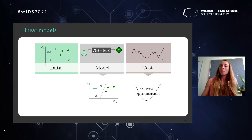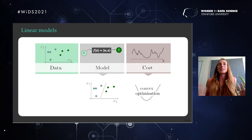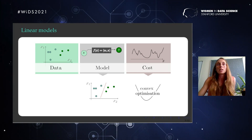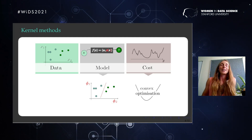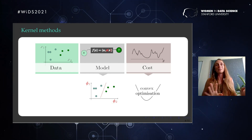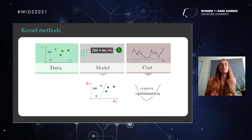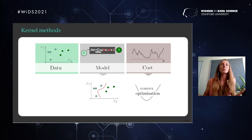Kernel methods: to understand what they do, you start with linear models, which just take an inner product between a vector representing your data and some trainable parameters. These models define limited linear decision boundaries in data space, but can be solved with convex optimization. Kernel methods like support vector machines can be explained by mapping data into very high dimensional spaces and applying a linear model. The beauty is that you don't solve the convex optimization in the high-dimensional space — you solve it in a low-dimensional space. This is also what we can do with quantum computing.